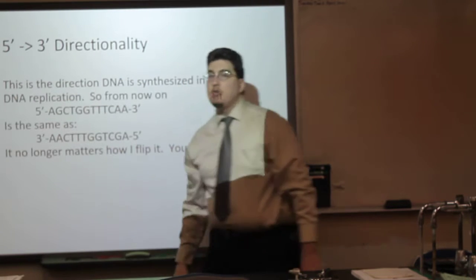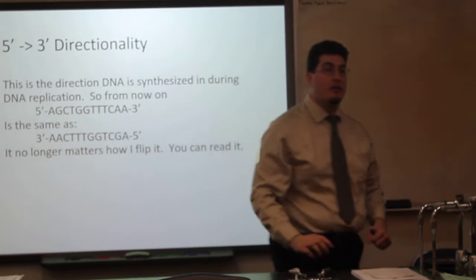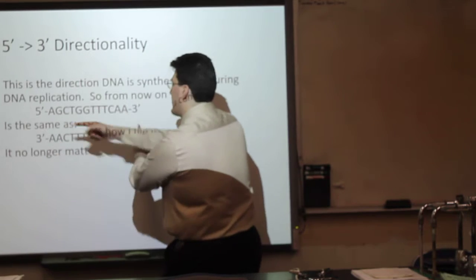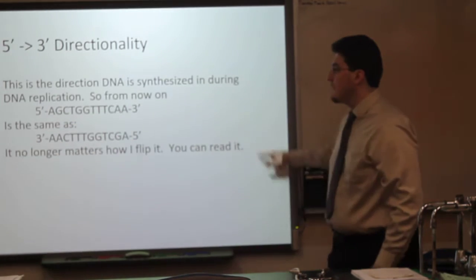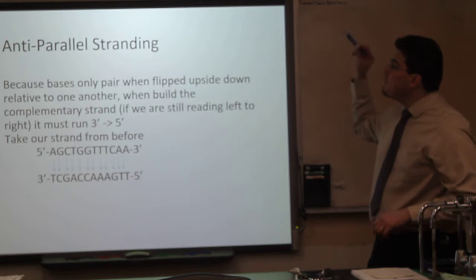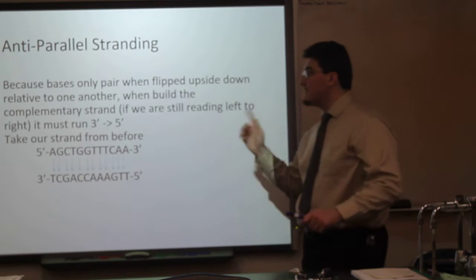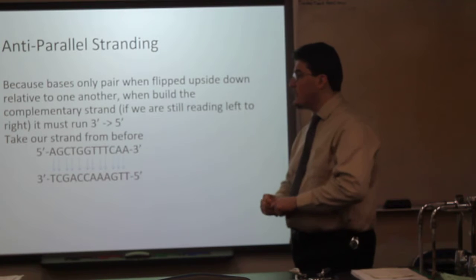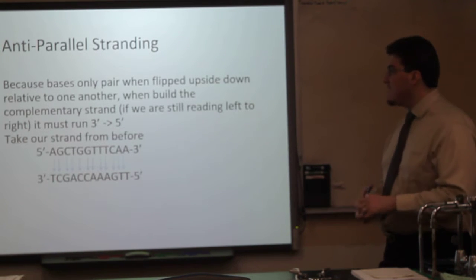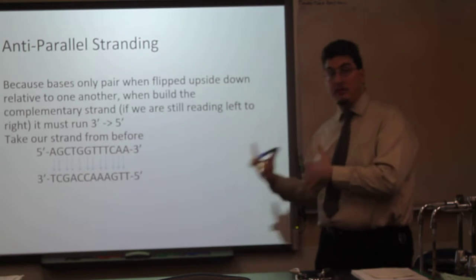These run backwards to each other, but these are the same molecules flipped backwards. You just rotate this and it is the same — anti-parallel stranding. Base pairs only pair correctly when they are flipped upside down relative to one another. So when you build the complementary strand, if we are still reading left to right, it must run 3' to 5'.